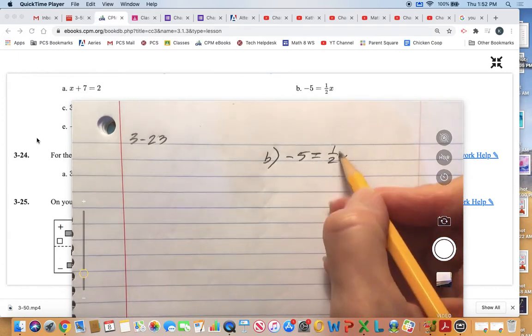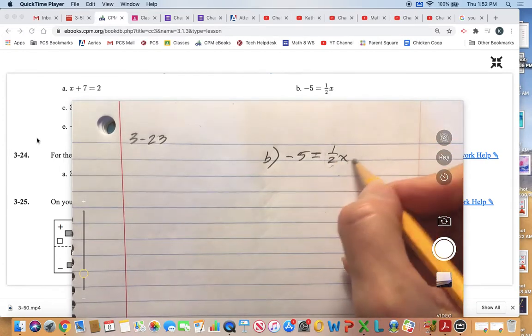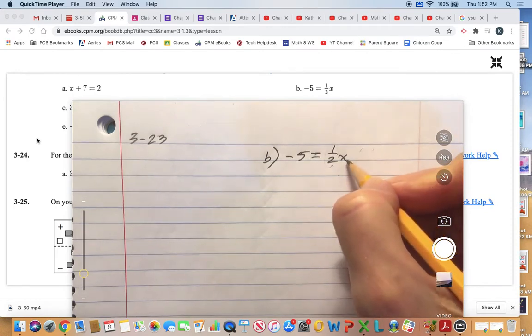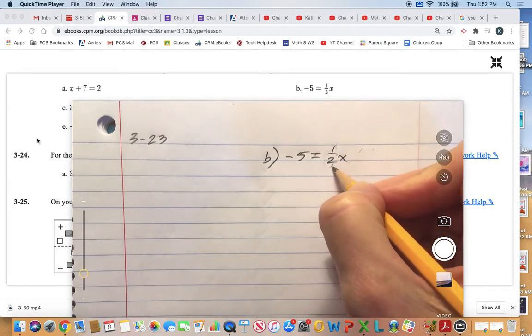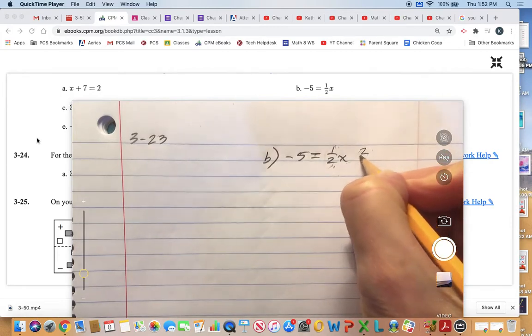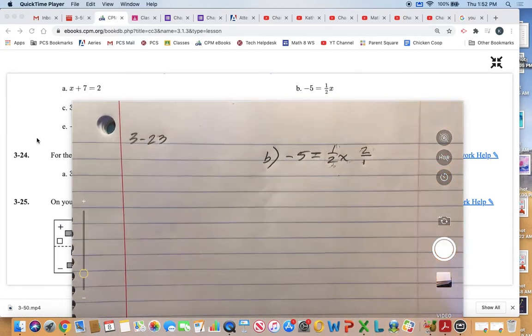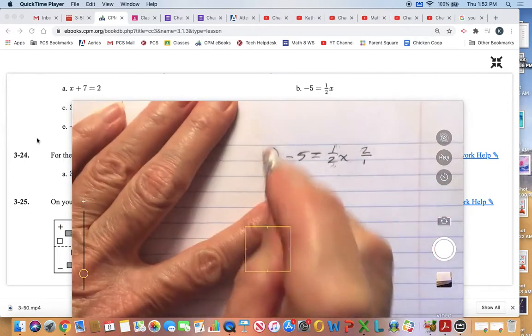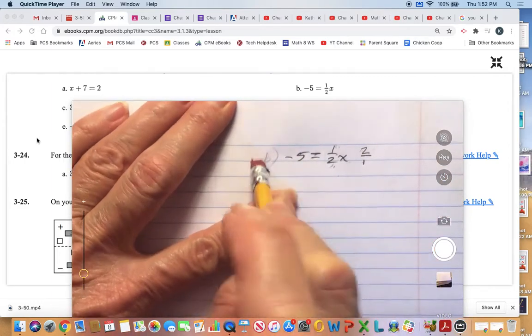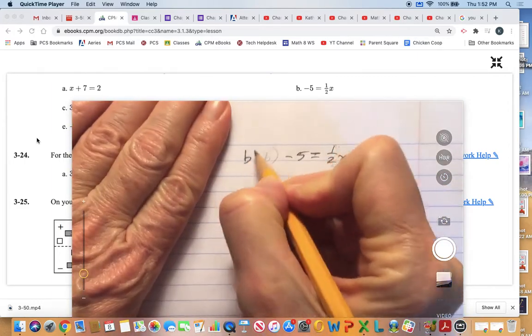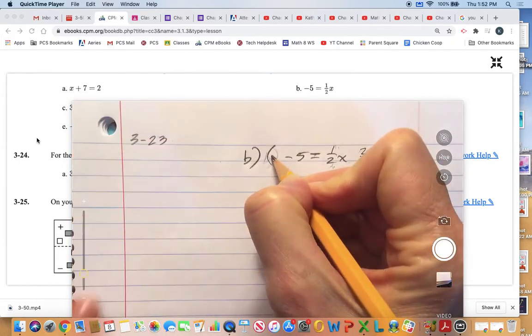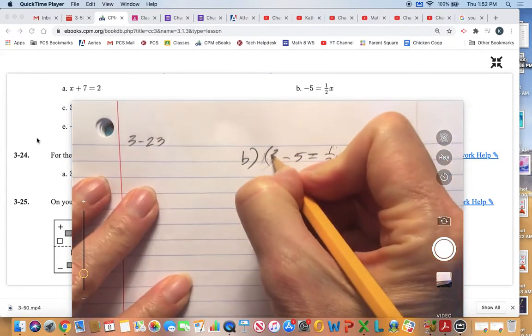In order to turn that into a giant 1, we can multiply by the reciprocal of 1/2, which is 2 over 1, or essentially 2. We have to do that on both sides, so I'm going to multiply this side by 2 also.